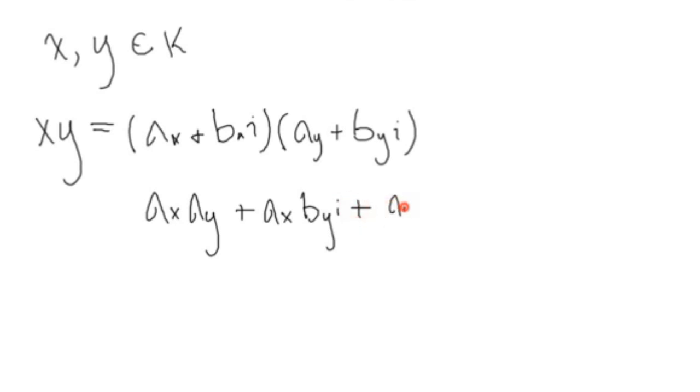And so, we have to take note that i square is negative one. Remember, because we're dealing with complex numbers here. So, our left side rational quantity here is going to be a x, a y. So, we just multiply it by negative one, this quantity here.